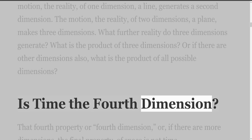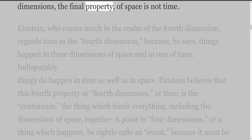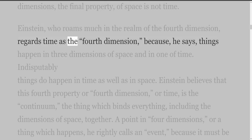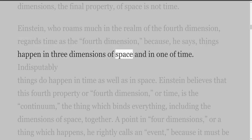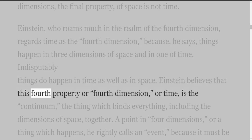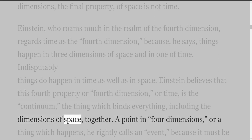Is time the fourth dimension? That fourth property, or fourth dimension, or if there are more dimensions, the final property of space, is not time. Einstein, who roams much in the realm of the fourth dimension, regards time as the fourth dimension, because, he says, things happen in three dimensions of space and in one of time. Indisputably things do happen in time as well as in space. Einstein believes that this fourth dimension, or time, is the continuum, the thing which binds everything, including the dimensions of space, together.